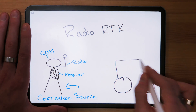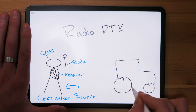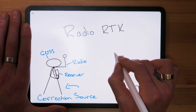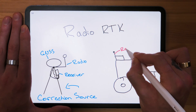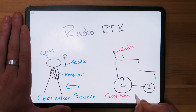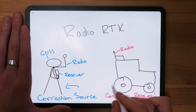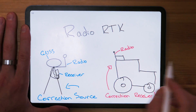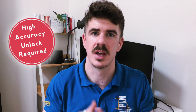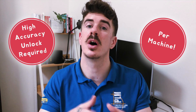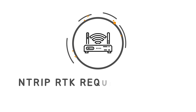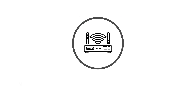Then there's the correction receiver. With the base station set up and generating corrections, you need hardware on your machines to receive that correction. In this case we'll be using a radio attached to a GNSS receiver already on board your machines. In addition, that GNSS receiver will also require a high accuracy unlock — and that is per machine: a radio and a high accuracy unlock.